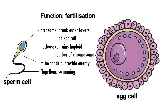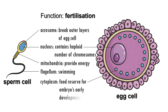In an egg cell, the cytoplasm contains yolk droplets made of protein and fat, which serve as food reserves for the embryo's early development. This ensures the embryo has the energy and materials it needs before implantation or before the placenta is formed.